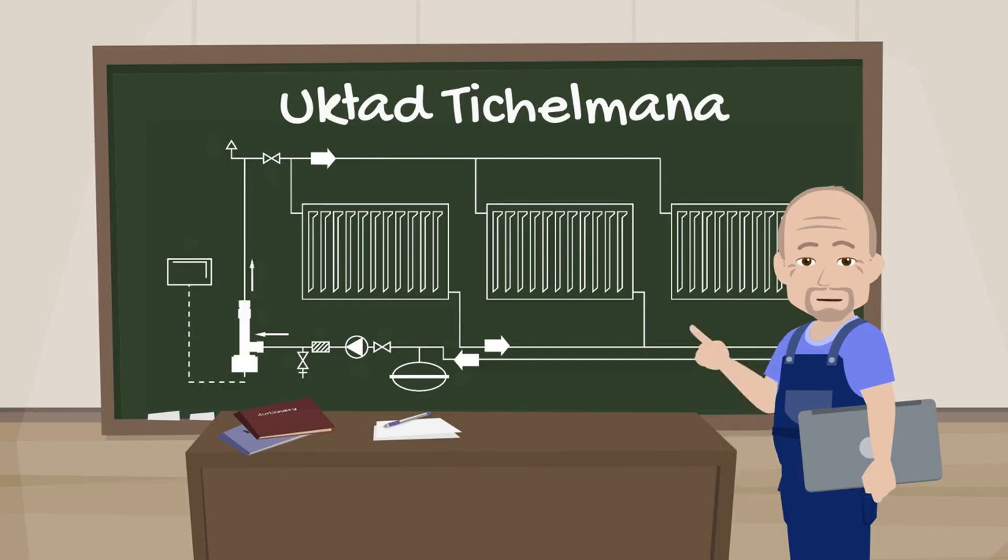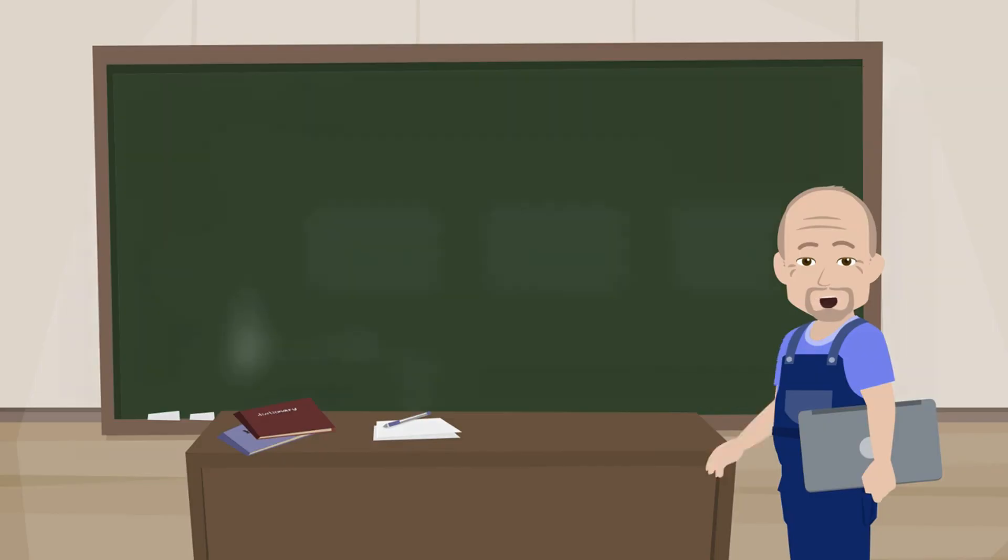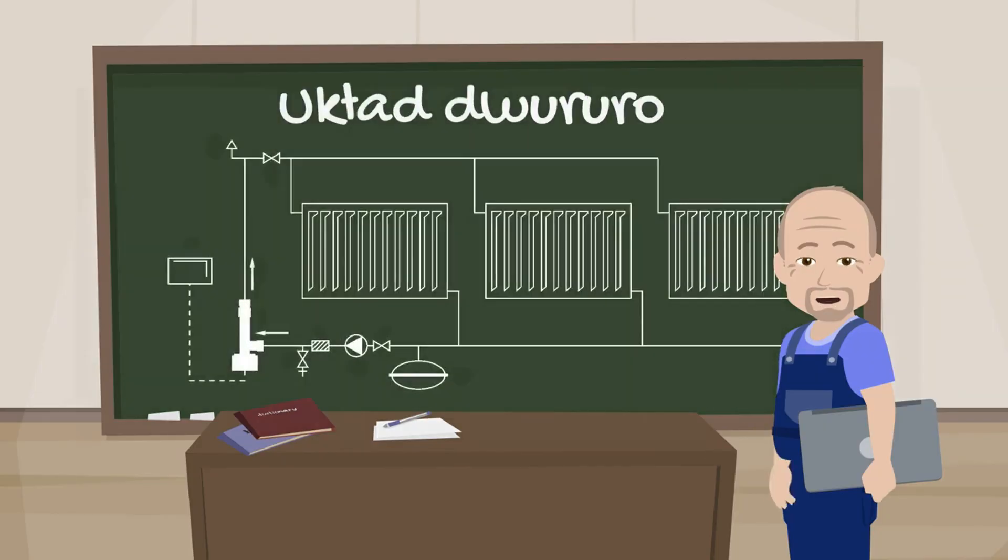What are the advantages and how does the system work? Let's first look at the common two-pipe system which is found almost everywhere in all heating systems. What are the connection options and what are their pros and cons?